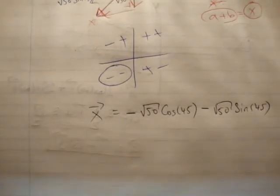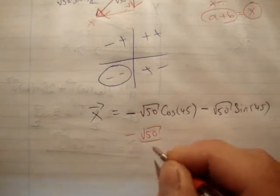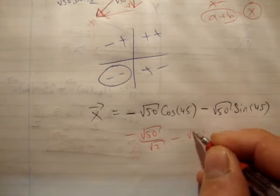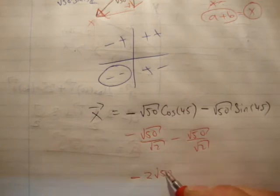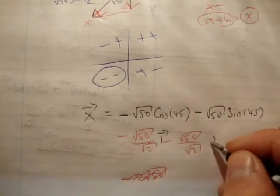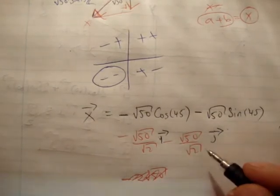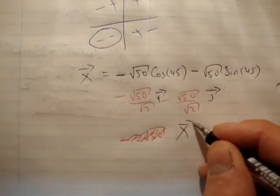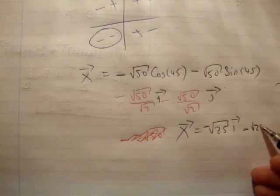Look in your log tables on page 13. The sine and cosine of 45 are 1 over root 2. We're going to get minus root 50 over root 2 i-hat minus root 50 over root 2 j-hat. Sorry, I didn't put in my unit vectors. That's i-hat, that's j-hat. The reason you can't add them is because they're in different directions. That would be root 25. So the answer would be x is equal to minus root 25 i-hat minus root 25 j-hat.